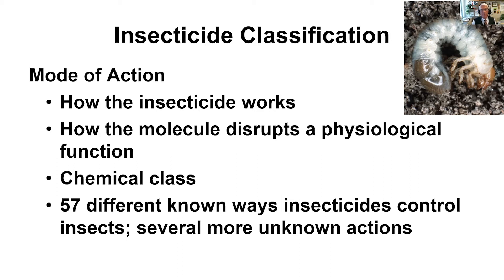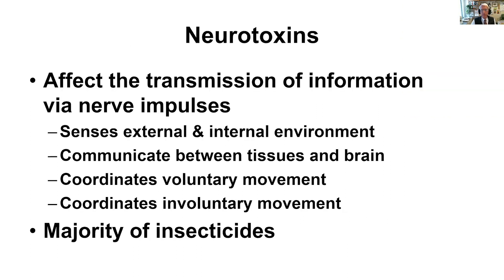We refer to these different modes of action as chemical classes, and we know there are about 57 different known ways that insecticides will work at the control of an insect. There are a dozen more that are not known, but we have lots of tools in the toolbox when we reach for an insecticide to control a pest problem.